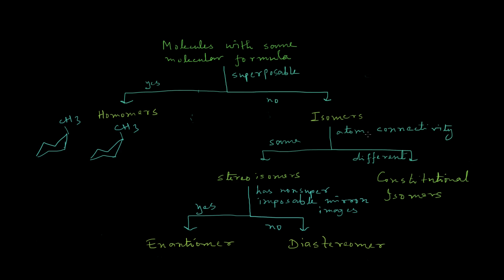When the atom connectivity is different, the isomers are called constitutional isomers. For example, these two molecules are isomers because they contain the same number of hydrogen, carbon, and chlorine atoms, but their connectivity is different. Here the chlorine is attached at the four position, whereas in the other molecule it is attached at carbon number two. So these two molecules are called constitutional isomers.